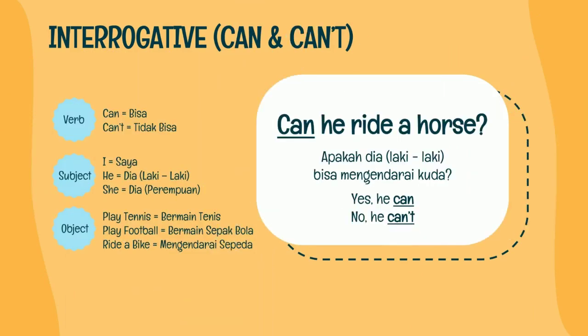Selanjutnya kita akan belajar tentang interrogative, atau dalam bahasa Indonesianya adalah kalimat tanya. Hampir sama dengan yang sebelumnya, namun pada kalimat interrogative, subjectnya kita pindahkan jadi yang kedua dan verbnya kita pindahkan ke posisi yang pertama. Contohnya: Can he ride a horse? Can di sini sebagai verb, he sebagai subject, ride a horse sebagai object.